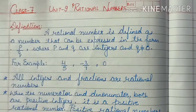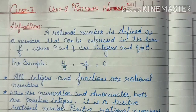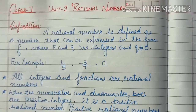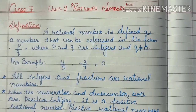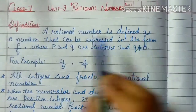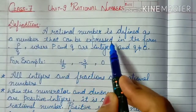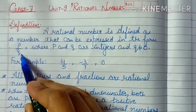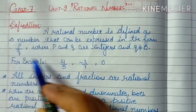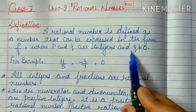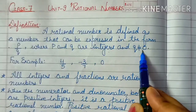Hello students, today we will start unit 9 rational numbers for class 7. Let's see first what are rational numbers. A rational number is defined as a number that can be expressed in the form P upon Q, that is numerator upon denominator, where P and Q are integers and Q is not equal to 0.